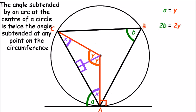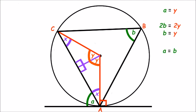So we can say that 2B equals 2Y. And simplifying this, we get that B equals Y. We already found that A equals Y, so we can now say that A equals B.